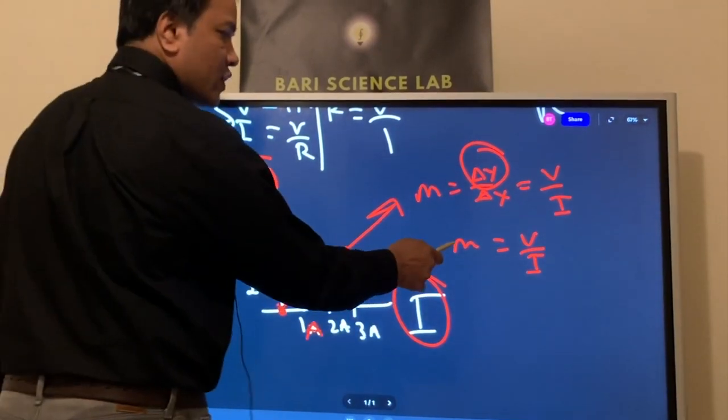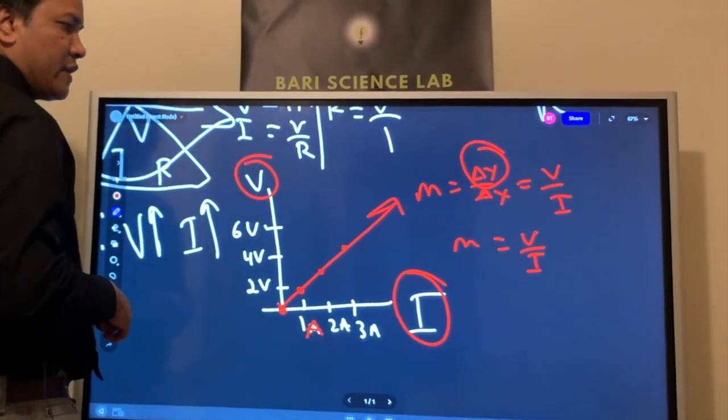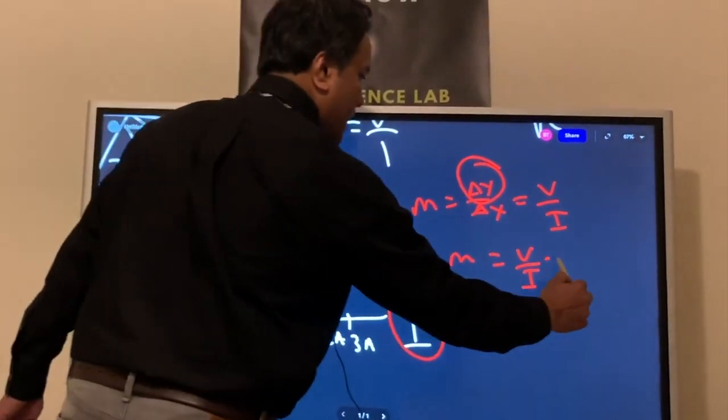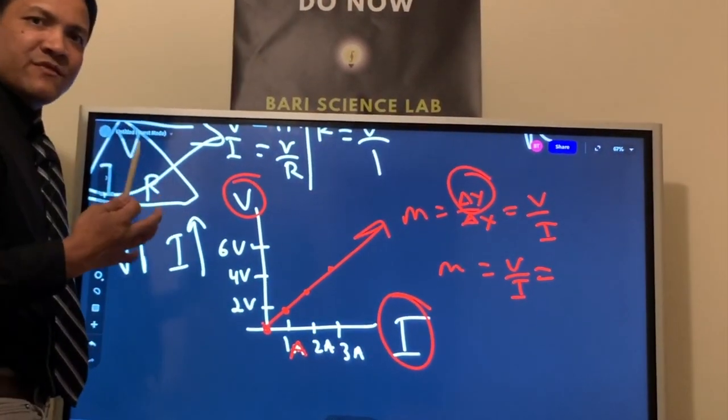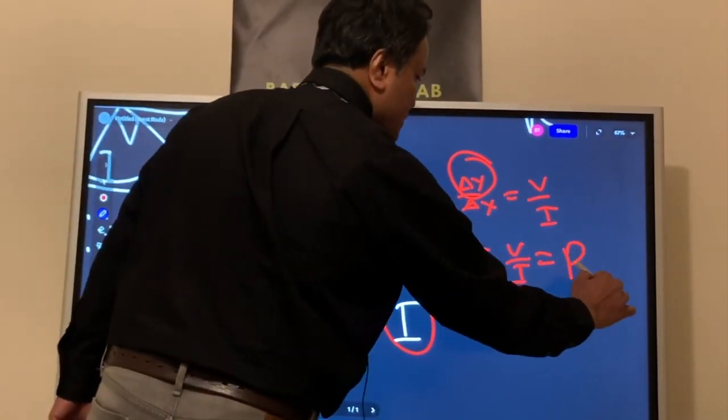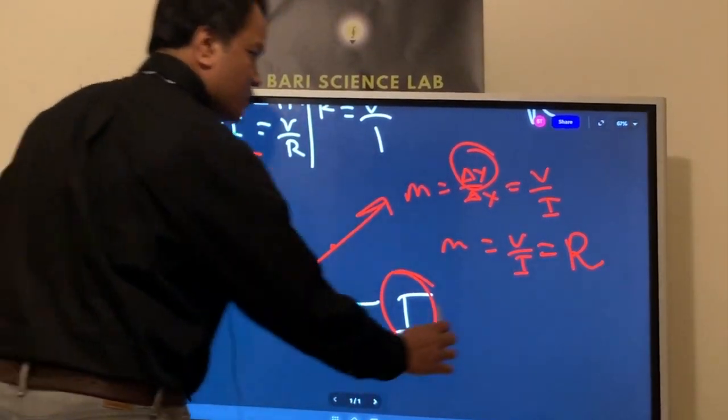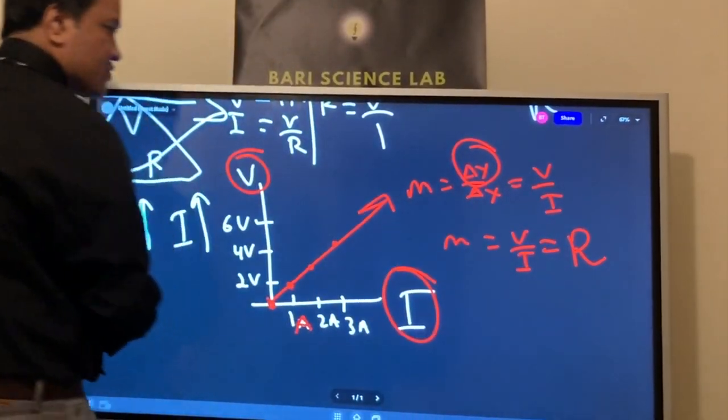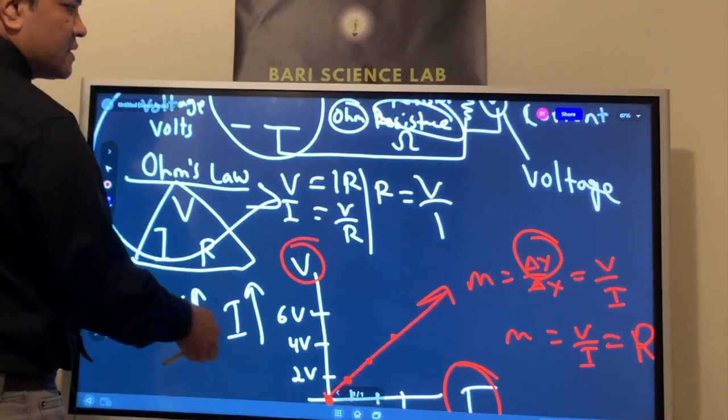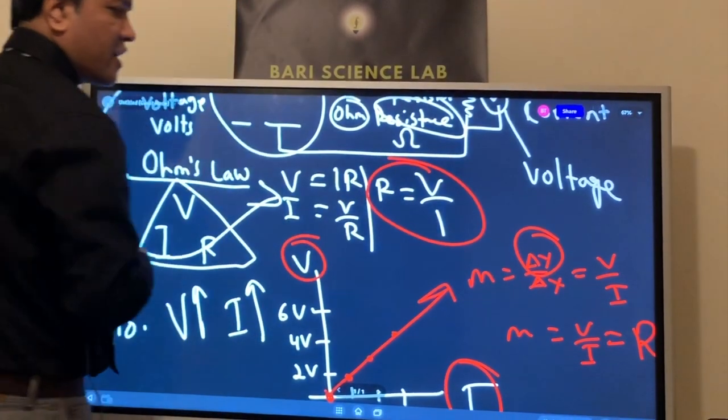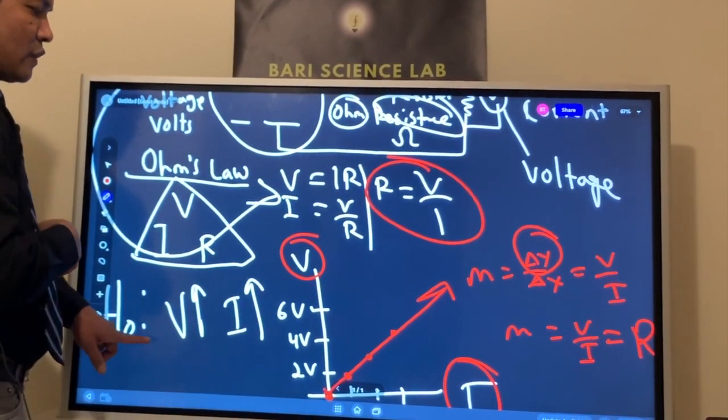Now, we're not going to call it M. We're going to give it a name. And Ohm gave it a name in 1827. We call it resistance. So then resistance is V over I. Let's check whether that is correct. Resistance is V over I.